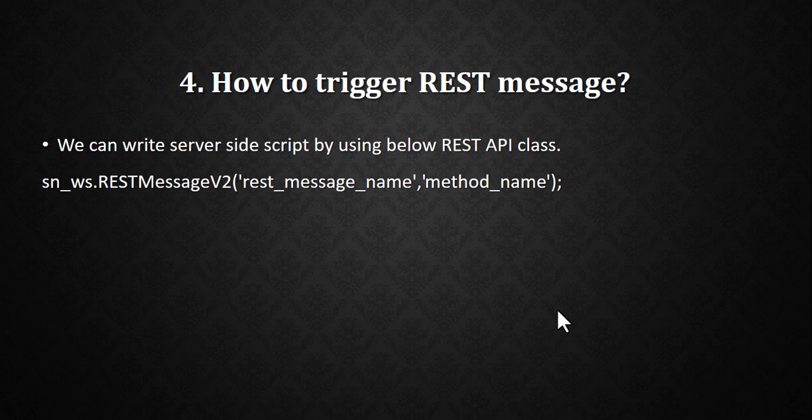The next question is: how do you trigger a REST message? This is a very common question. If you say you've worked on integration and mention REST integration, the interviewer may ask about the syntax for triggering a REST message. The syntax is: sn_ws.RESTMessageV2, followed by the REST message name and then the method you want to call. ServiceNow has five different HTTP methods, and you specify which one you want to invoke.